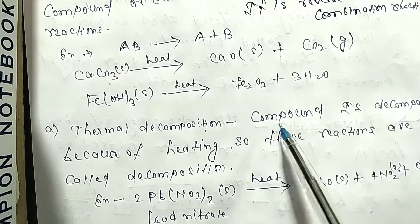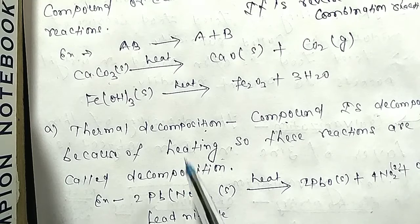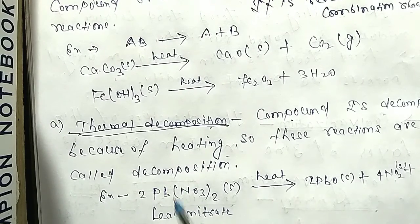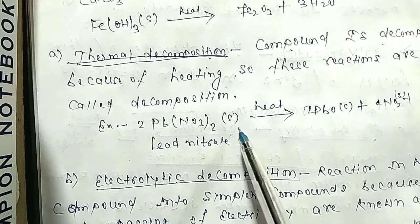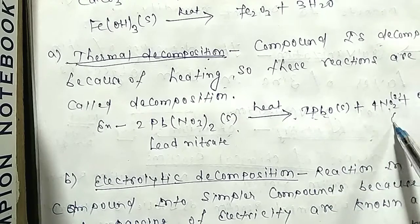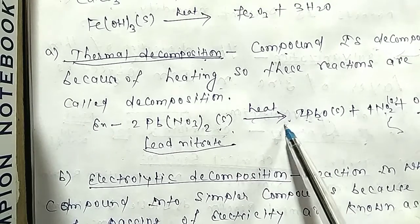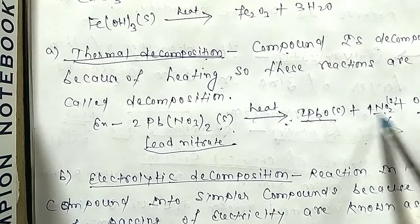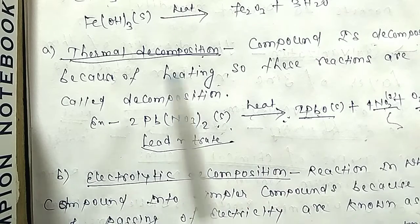Thermal decomposition: this compound is decomposed by heating. For example, Pb(NO₃)₂ in solid state, when heated, decomposes into lead oxide (PbO) plus nitrogen dioxide (NO₂) plus O₂ gas. A compound that decomposes due to heat undergoes thermal decomposition.